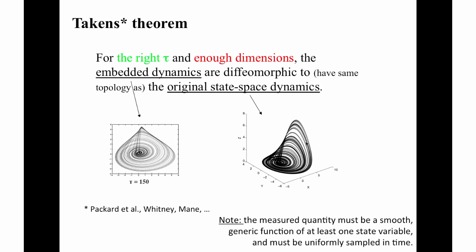In particular, you need to choose m, the dimension, and tau, the delay, properly. Those are the colored words in this slide. If you do that, the reconstructed dynamics are identical in a very specific mathematical way to the full dynamics. We'll come back to these big words in here, this diffeomorphic and topology, in more detail in the next segment. For now, you can think of them as meaning have the same qualitative shape. The words in the bottom right of the slide mean that the sensor that you use to harvest the data has to perform a smooth measurement too. I'll come back to that as well.